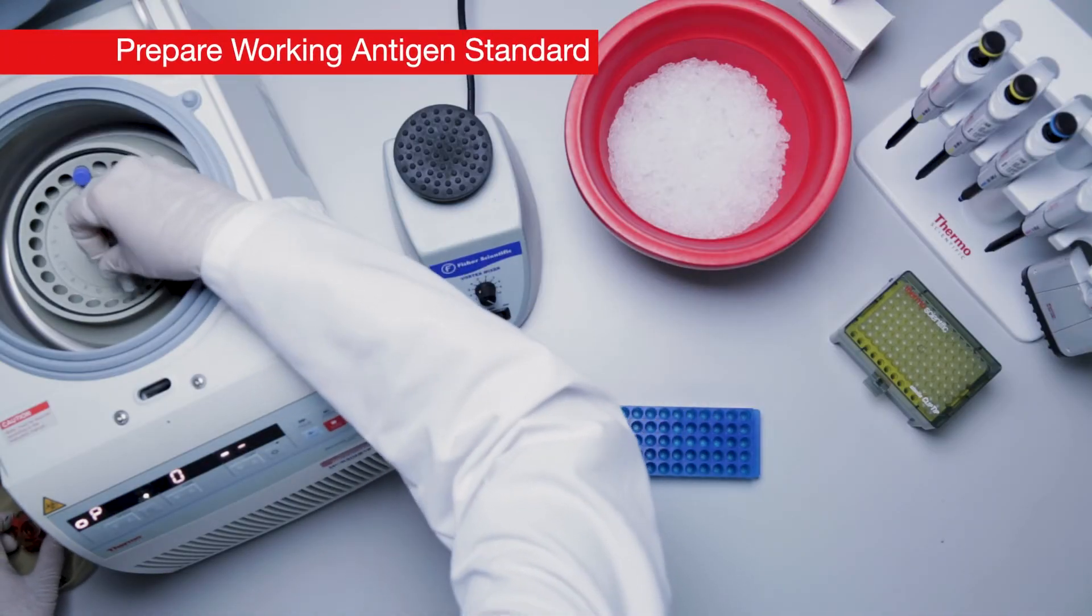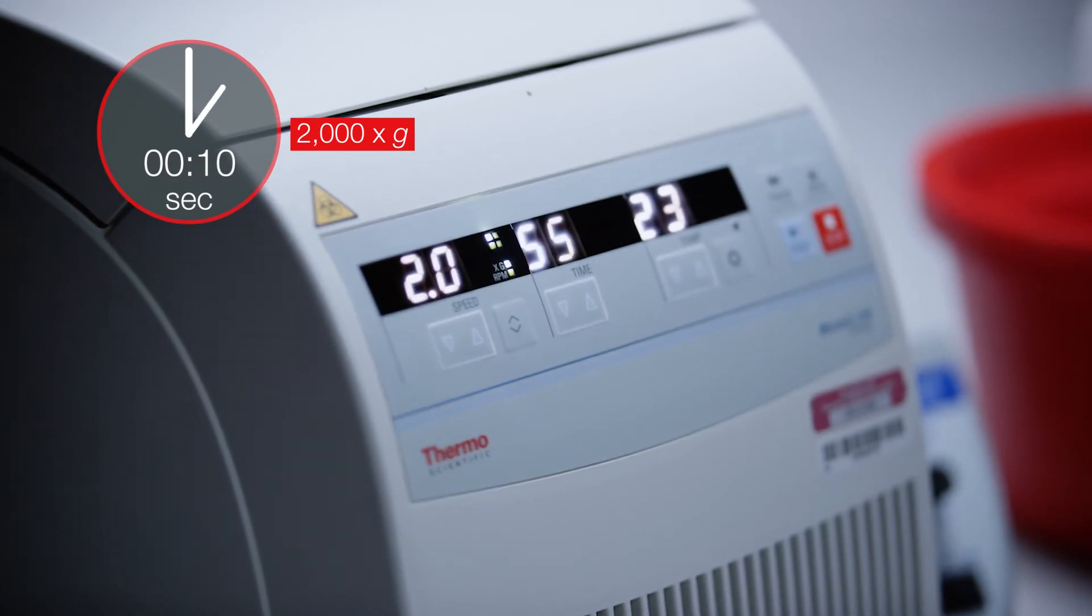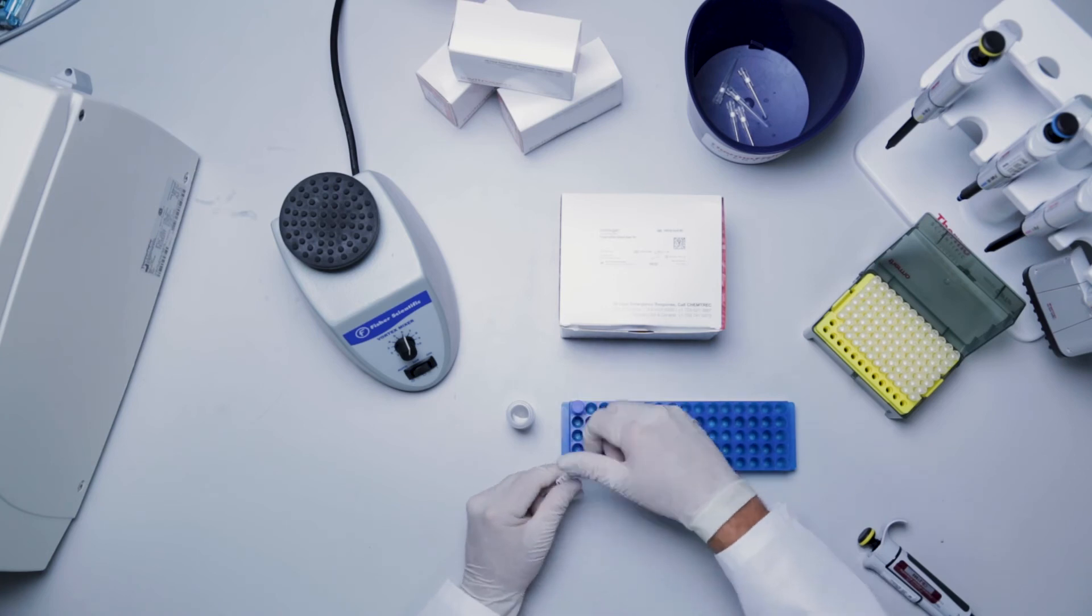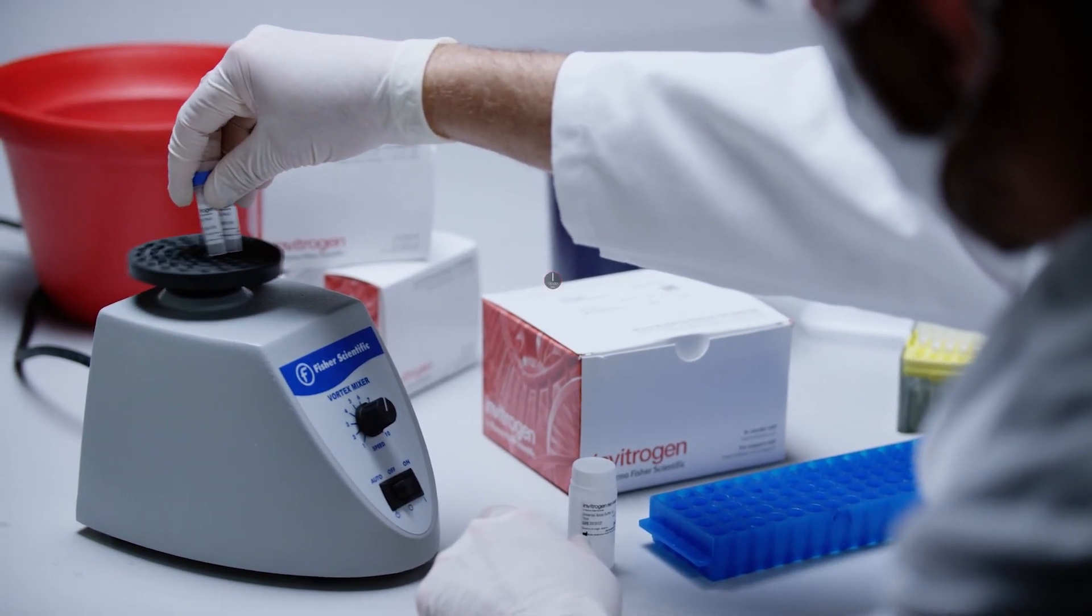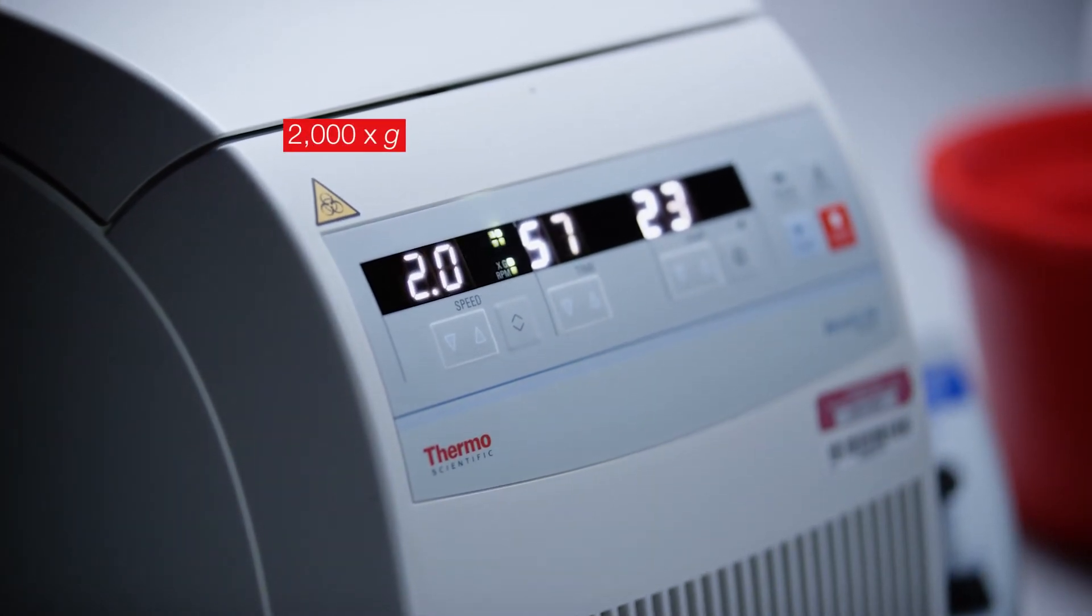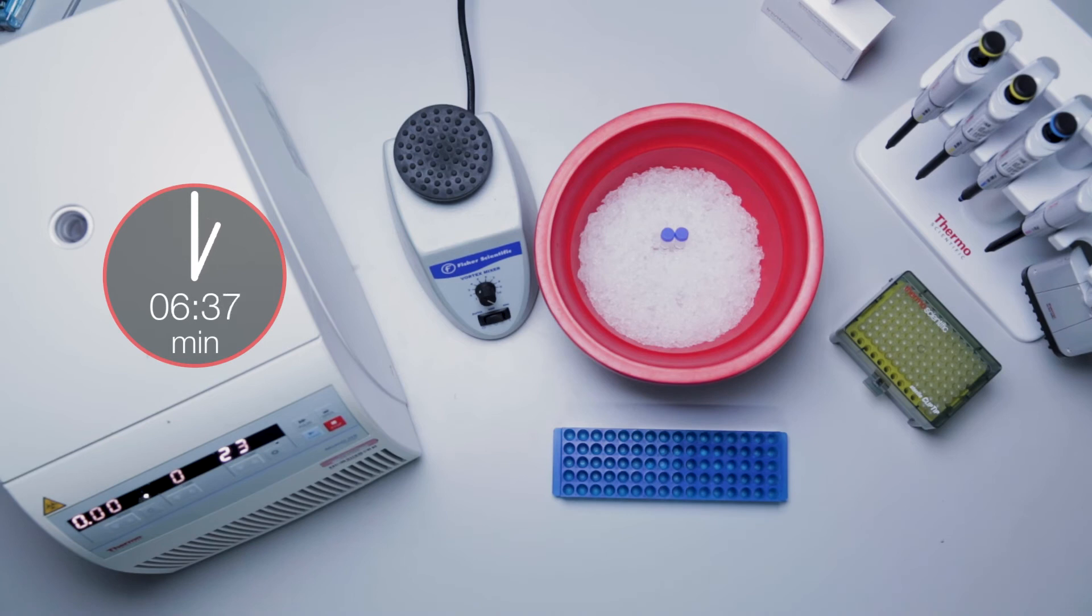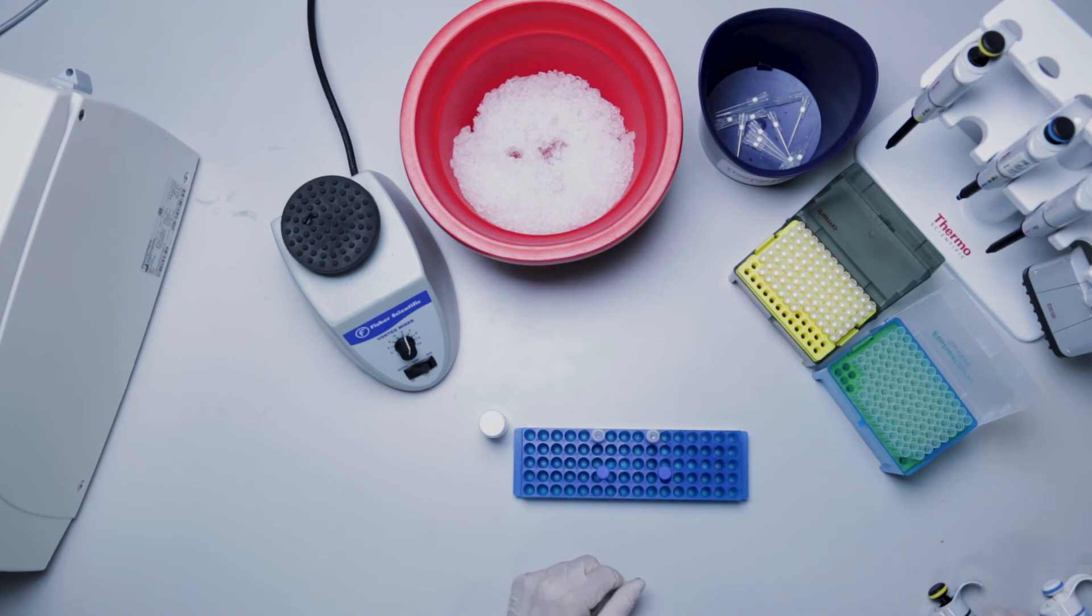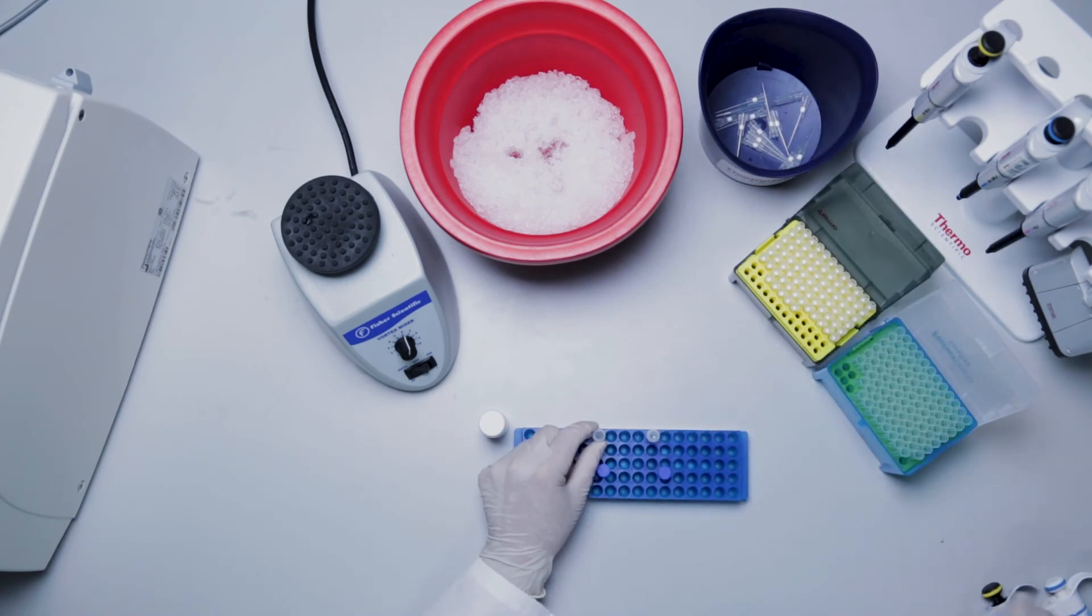Centrifuge each antigen standard vial at 2000 g for 10 seconds. Add 50 microliters of universal assay buffer or cell culture medium to each vial. Vortex each antigen standard vial at high speed for 30 seconds. Centrifuge at 2000 g for 10 seconds to collect the contents at the bottom of the vials. Incubate on ice for 10 minutes to ensure complete reconstitution. Pool the entire contents of each vial into one of the vials and fill with sample type specific buffer to a total volume of 250 microliters.